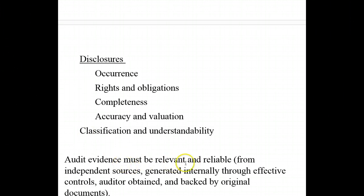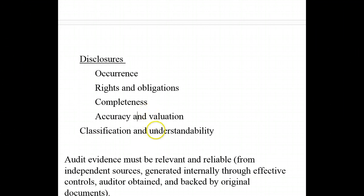Audit evidence has to be both relevant and reliable. We have to consider the assertions management is making about account balances, classes of transactions, and disclosures, and obtain audit evidence to support that these are fairly representative. One way to get reliable information is to get it from independent outside sources. We can also get reliable audit evidence from internal documents as long as we have a good internal control structure. Direct knowledge from the auditor and evidence backed by original documentation are also strong indicators of reliability.